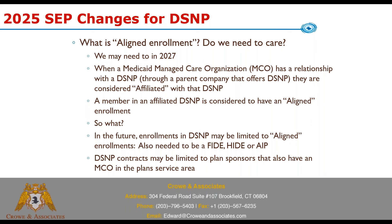In the future, D-SNP contracts may be limited to plan sponsors that also have an MCO in the plan service area — perhaps by 2026 or 2027. If a company offers a D-SNP but doesn't own an MCO, they probably won't be able to have people enroll in that plan. But for this year, what you worry about is whether the plan meets the three classification criteria.